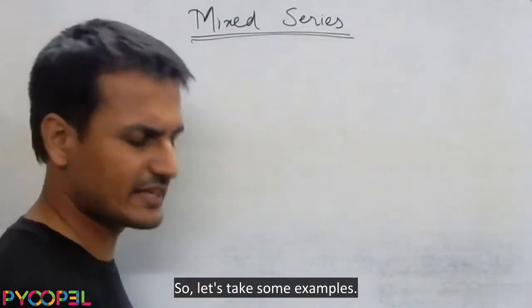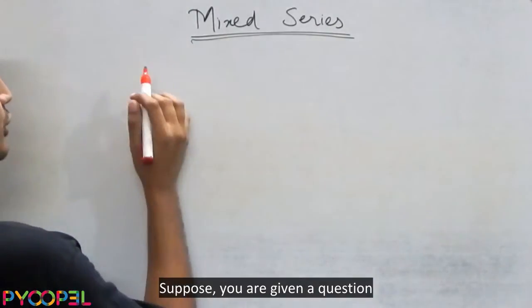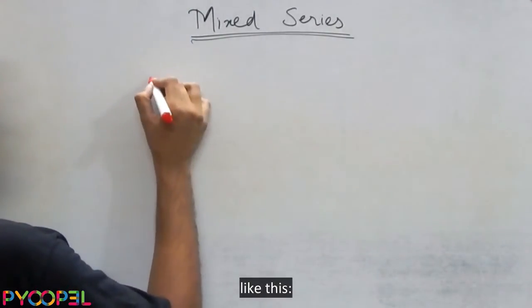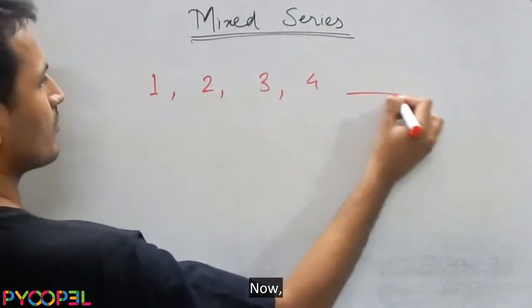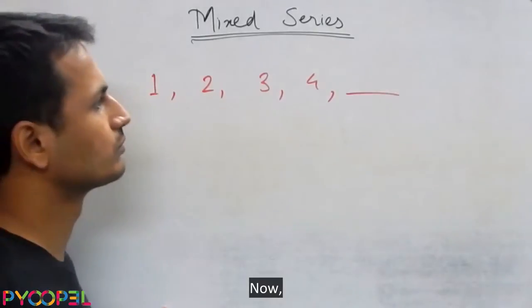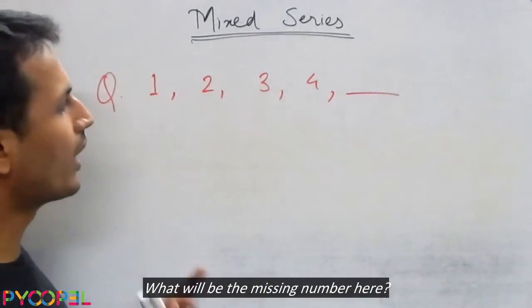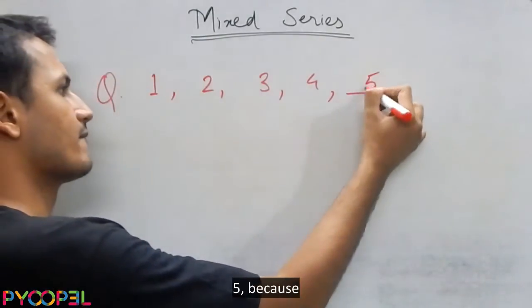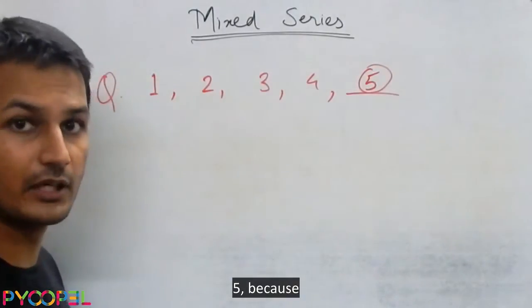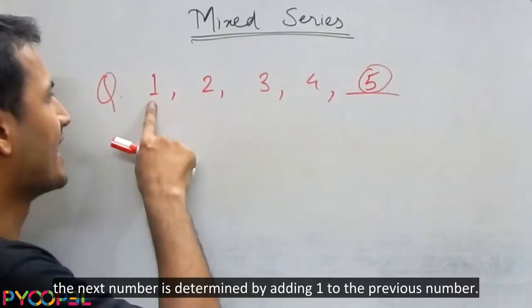So let's take some examples. Suppose you're given a question like this. Now what will be the missing number here? 1, 2, 3, 4. We get to understand that the next number should be 5 because the next number is determined by adding 1 to the previous number.